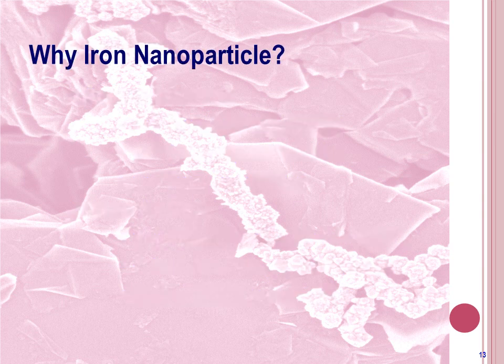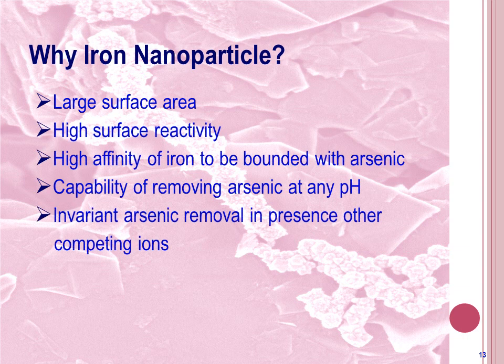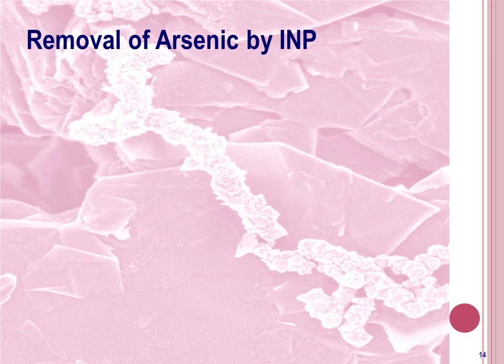A question may arise as to why we are interested in using nanoparticles in the cases mentioned in the previous slide. The main reasons for choosing INP are its large surface area, high surface reactivity, high affinity of iron to bond with arsenic, capability of removing arsenic at high pH, and invariant arsenic removal in the presence of other competing ions. Now let's have a look at the arsenic removal procedure by INP.